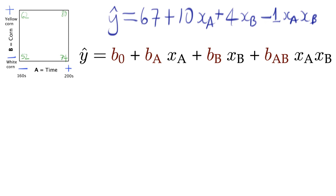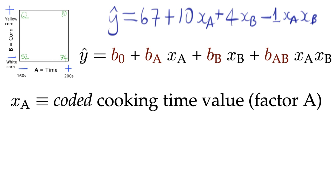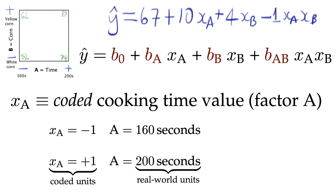The most general form of the least squares model for this system is y equals b0 plus bA times xA plus bB times xB plus bAB times xA times xB. The xA is the coded value for factor A, and it represents the amount of cooking time. If xA is minus 1, that represents 160 seconds of time, and xA equal to plus 1 represents 200 seconds of cooking time. The minus 1 and plus 1 are called coded units, and the 160 seconds and 200 seconds are called real-world units. Note that we cannot use real-world units in this equation, only the coded units.